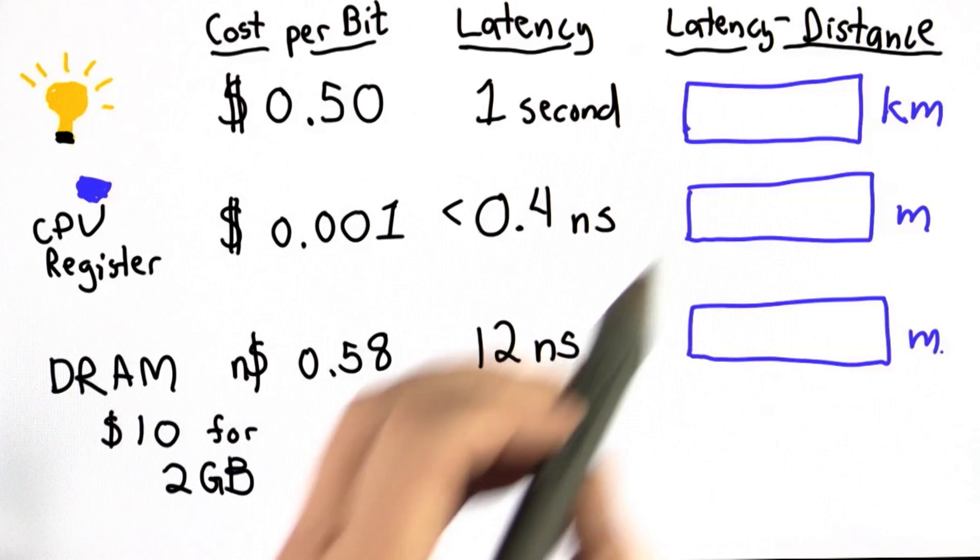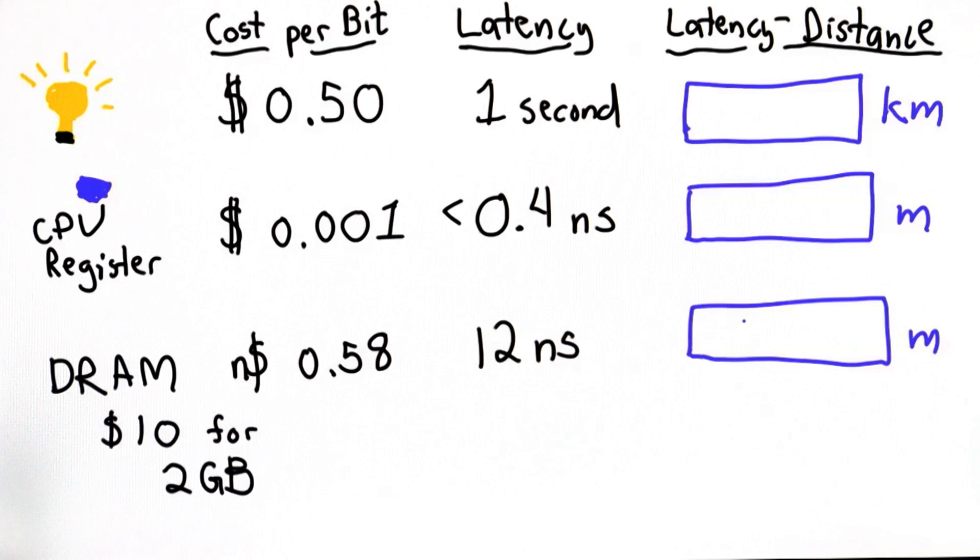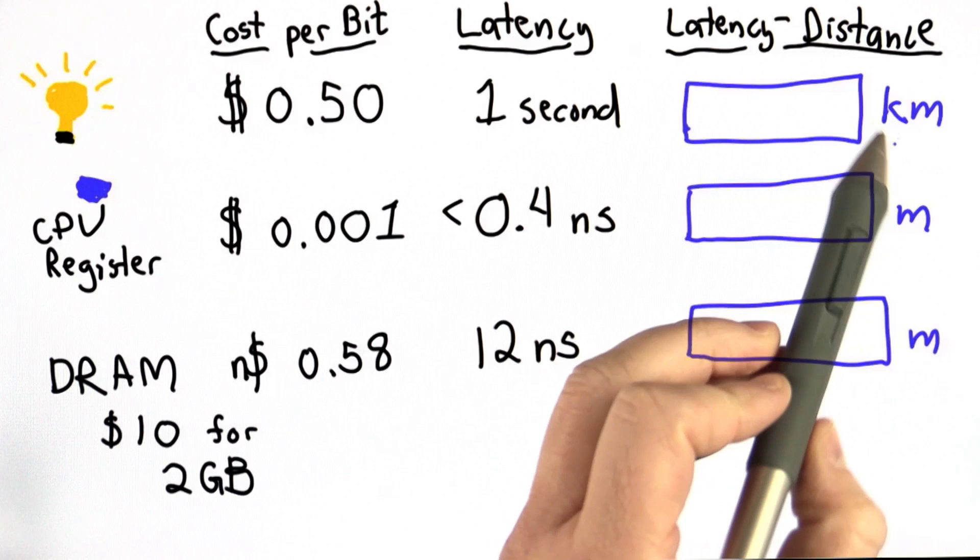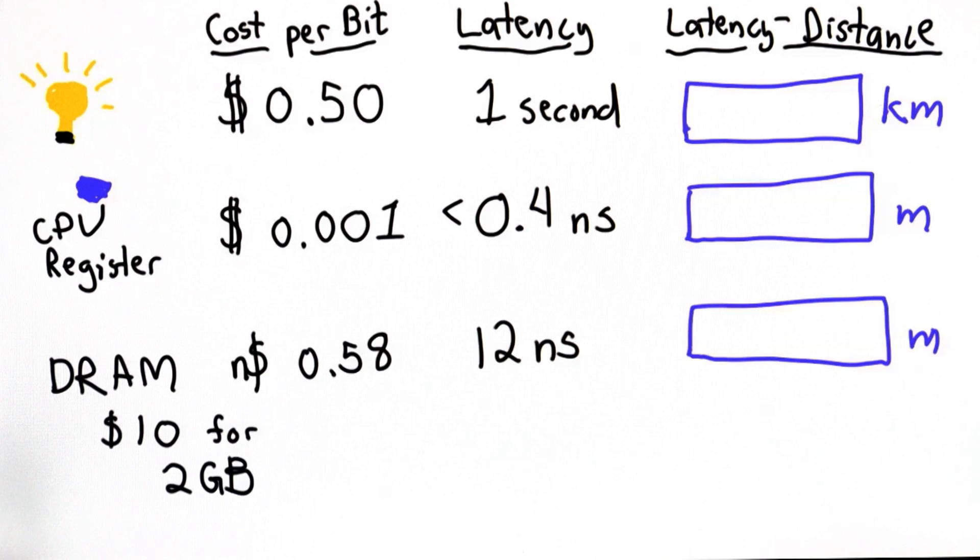So now, for the quiz, I want you to figure out the latency distance for each of these different types of memory. Note that the units are different here. We use dollars and nano dollars. For the distances, we're going to use kilometers, meters, and meters. And you've got all the information you have here.